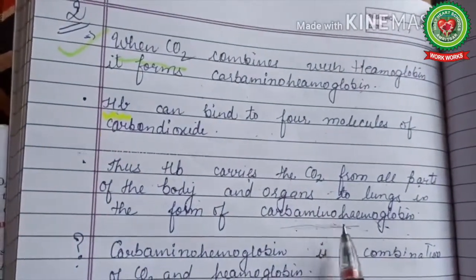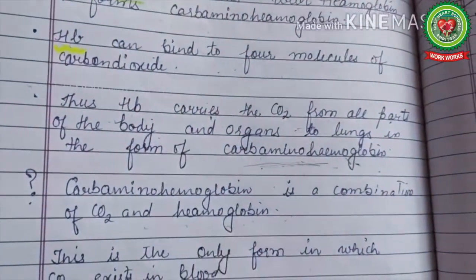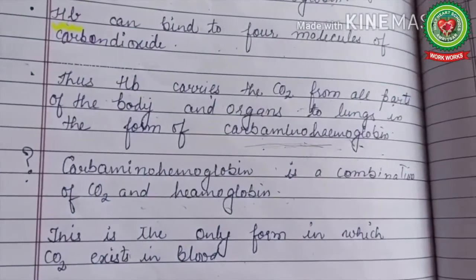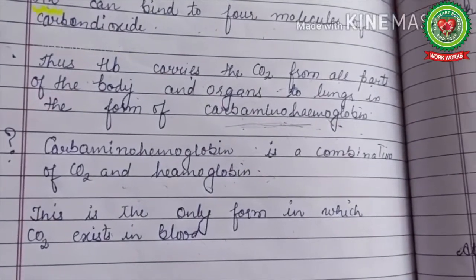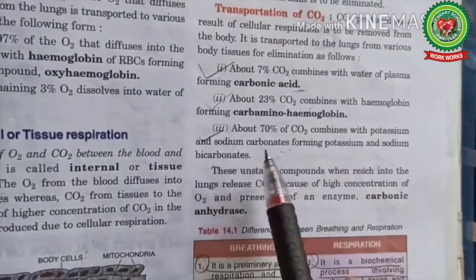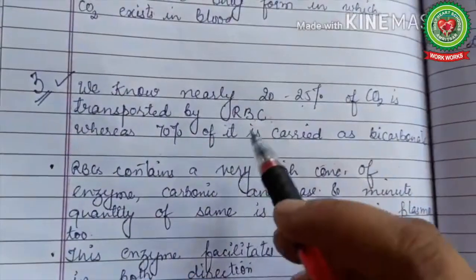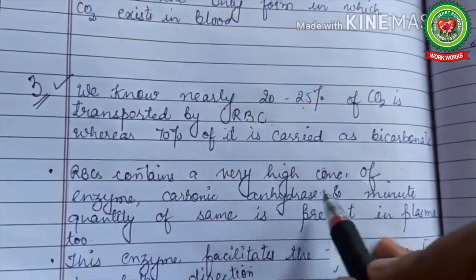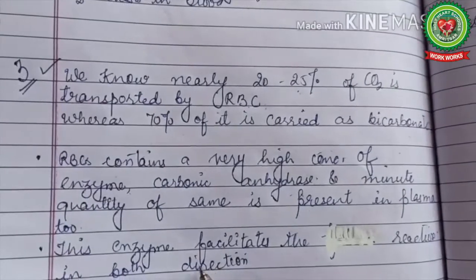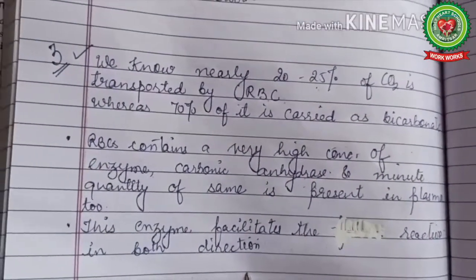Carbamino hemoglobin is actually a combination of carbon dioxide and hemoglobin, and this is the form in which carbon dioxide exists in the blood. About 70% of carbon dioxide combines with potassium and sodium carbonates forming potassium and sodium bicarbonates. RBCs contain a very high concentration of the enzyme carbonic anhydrase, and a minute quantity is also present in the plasma. This enzyme facilitates the reaction in both directions — during inspiration as well as expiration.